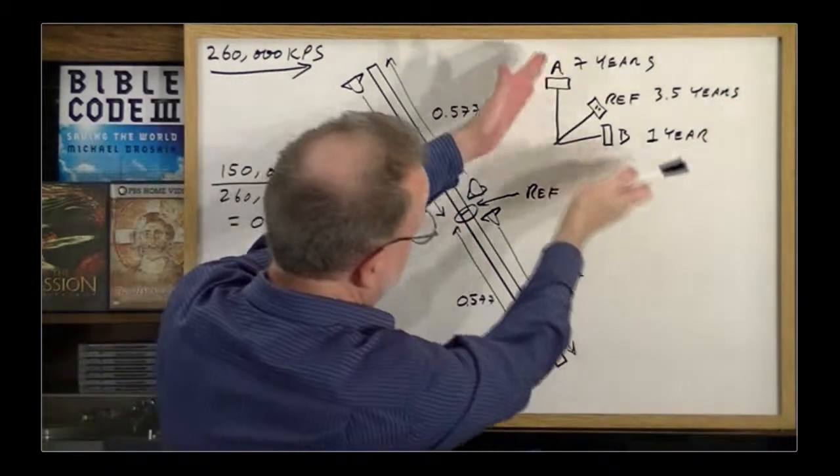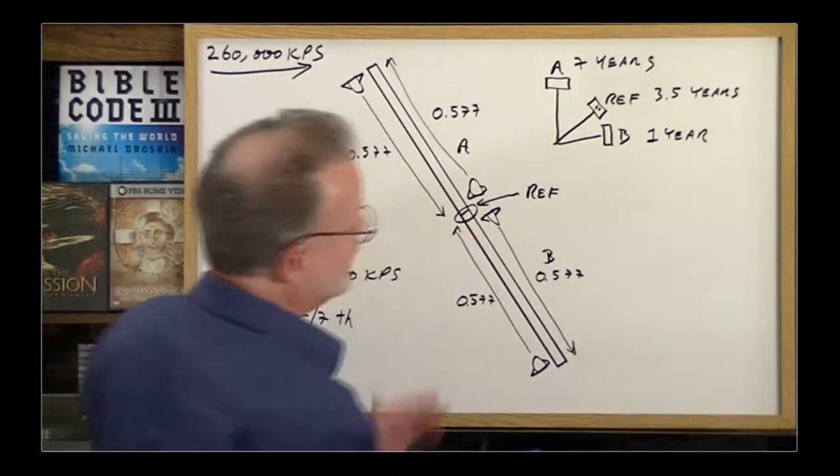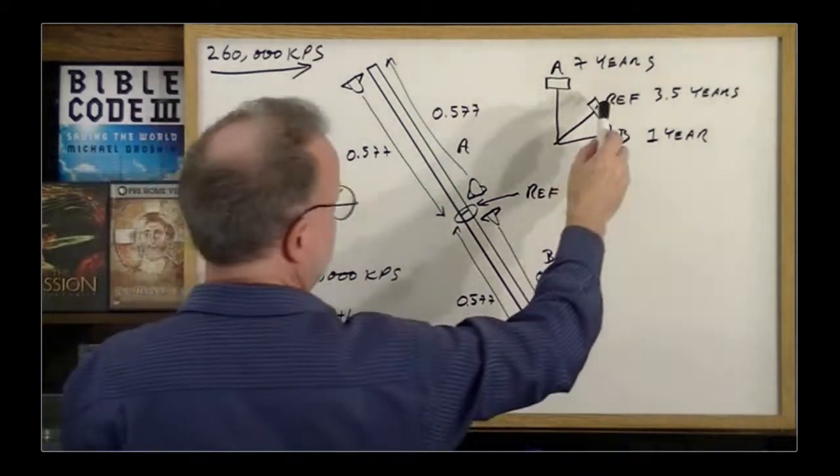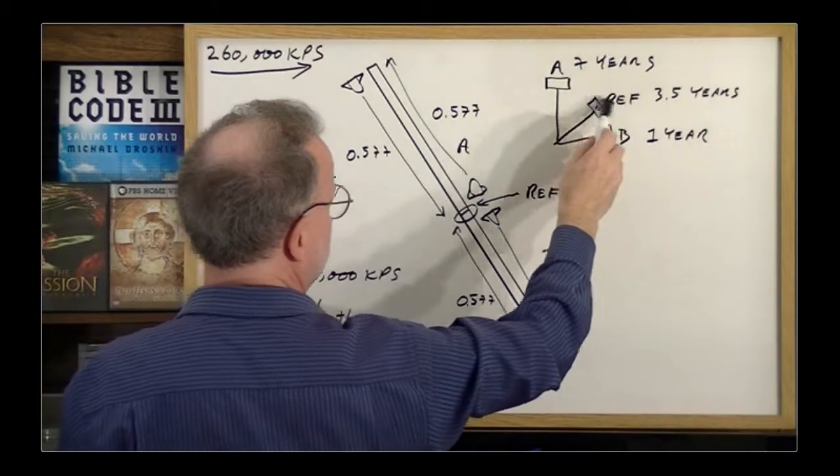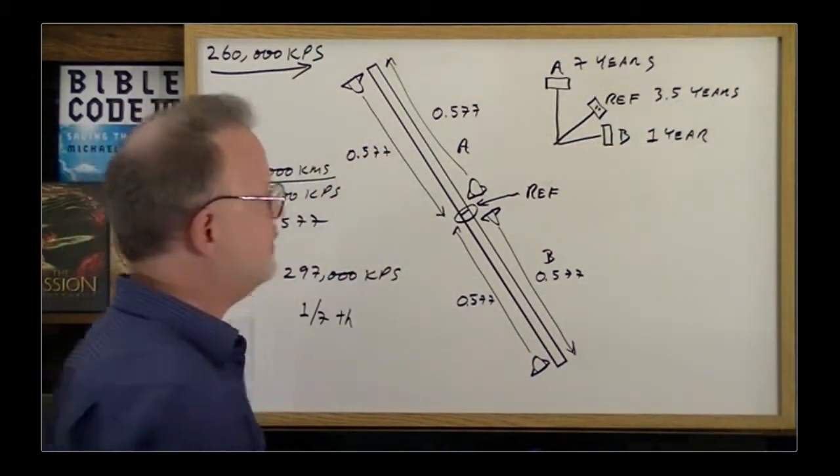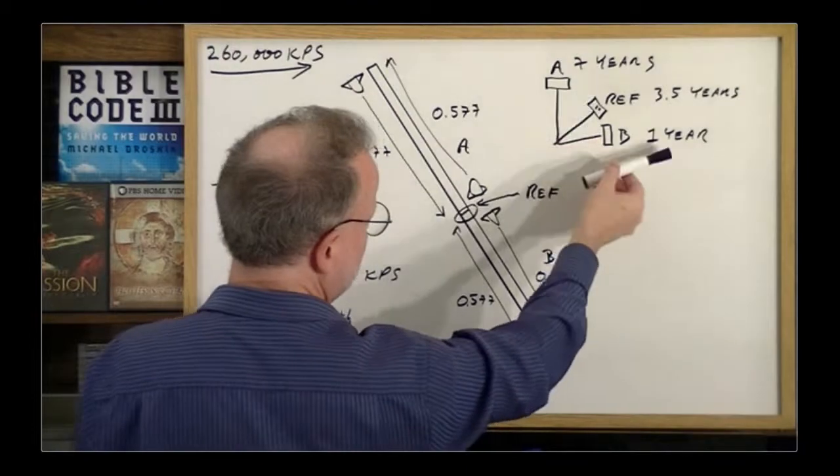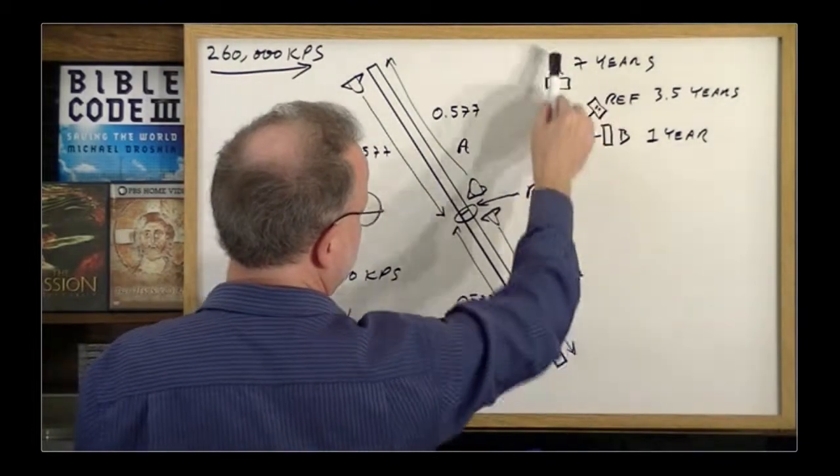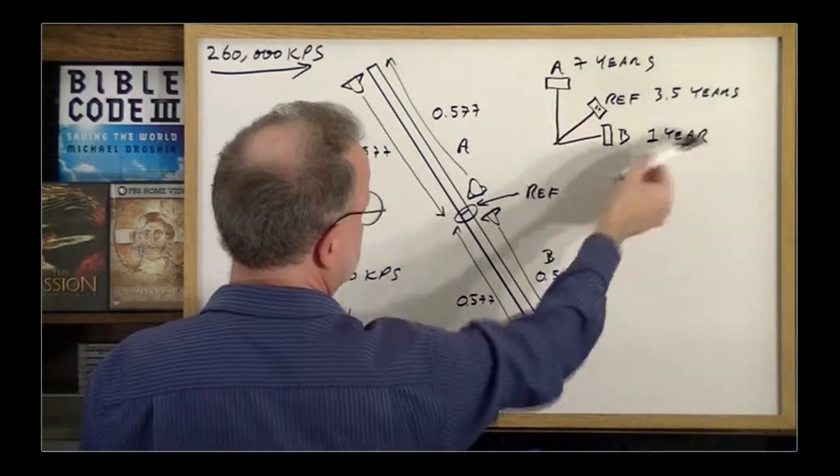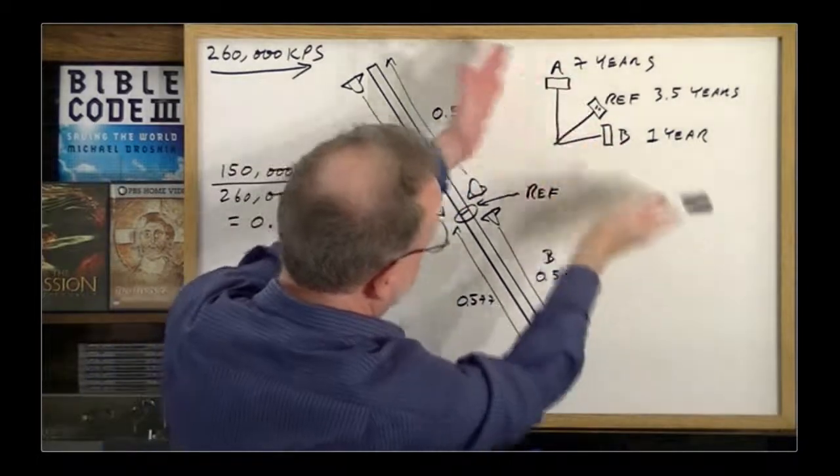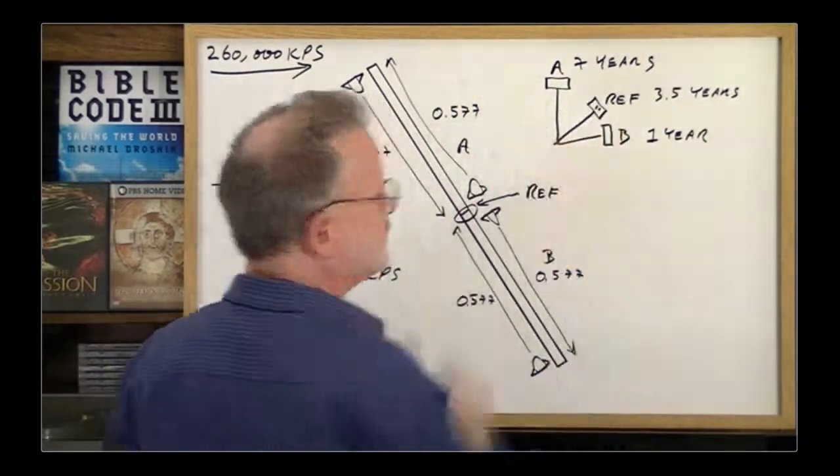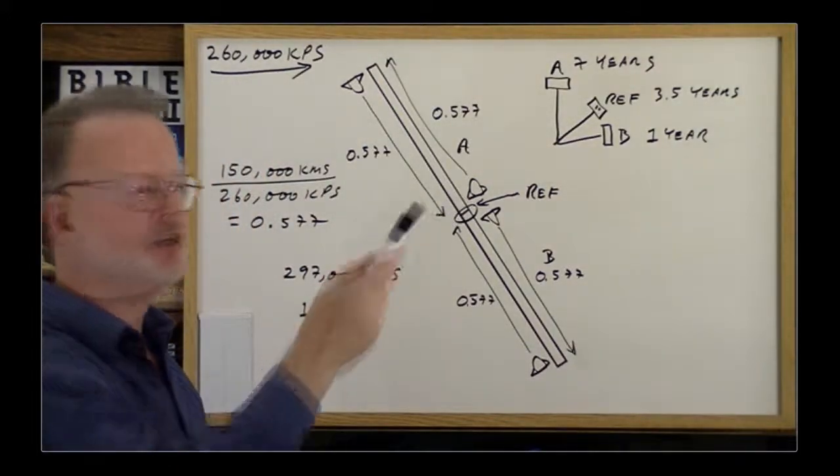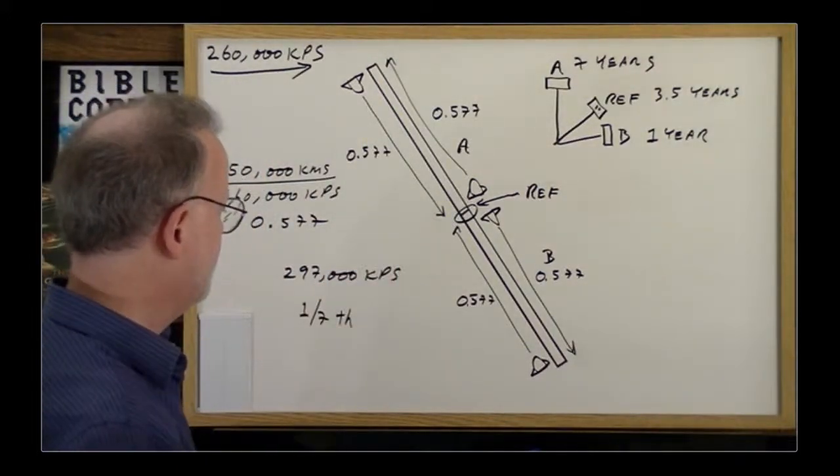However, if they went off like that and then came back when they're all lined up again. These two would experience half as much time as Mr. Reference did. Assuming we go to our usual speeds of 260 and so forth. So even though there's a radical difference here, one year, seven years. If they do the round trip, still they end up aging less than the one who stayed put and kept on going in a specific direction. So fascinating. So fascinating.